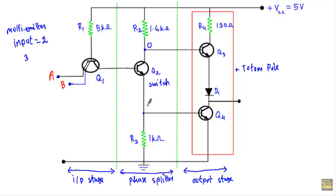When the base terminal of transistor Q3 is at logic zero or low state, the base terminal of transistor Q4 will be at logic one or high state. Or if the base terminal of transistor Q3 is at high voltage or logic one state, the base terminal of transistor Q4 will be at low state. This is how it splits the logical zero and logical one phase.